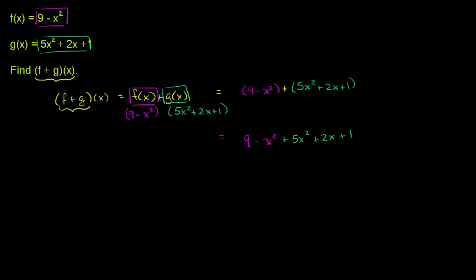We have two x² terms, or second degree terms: 5x² and negative x². 5x² minus x² is 4x². You only have one first degree term, 2x. Then you have two constant terms: 9 and 1. 9 plus 1 gets us to 10. So we're done.